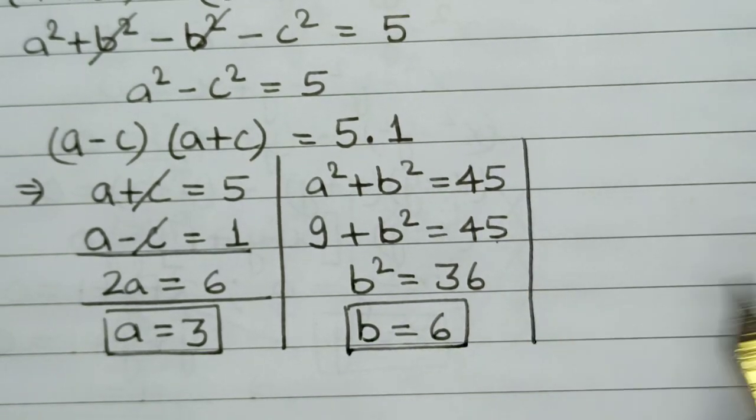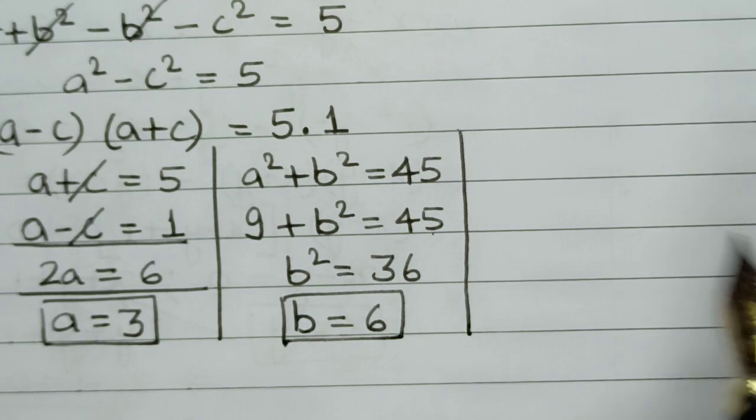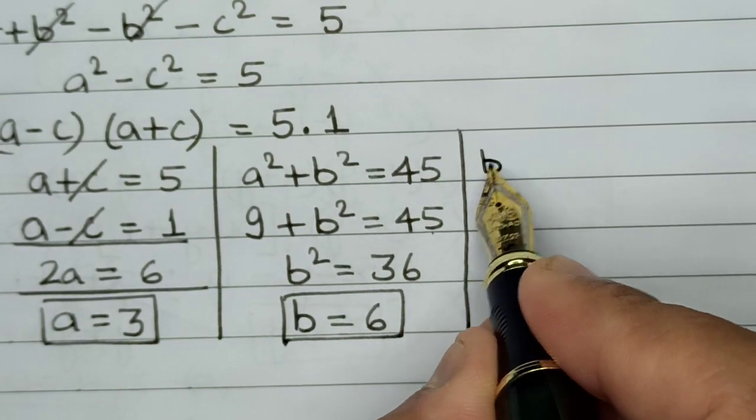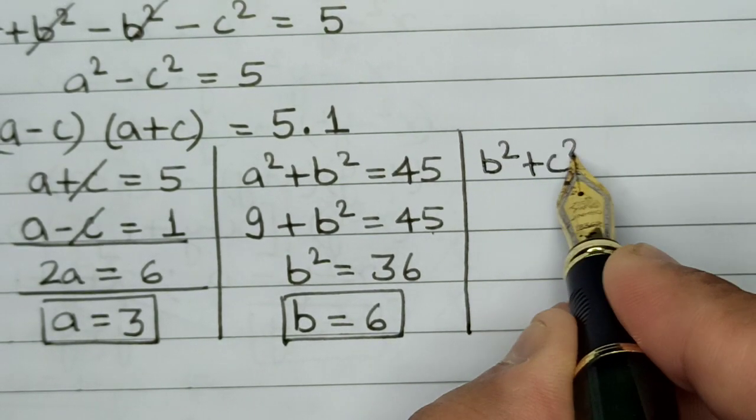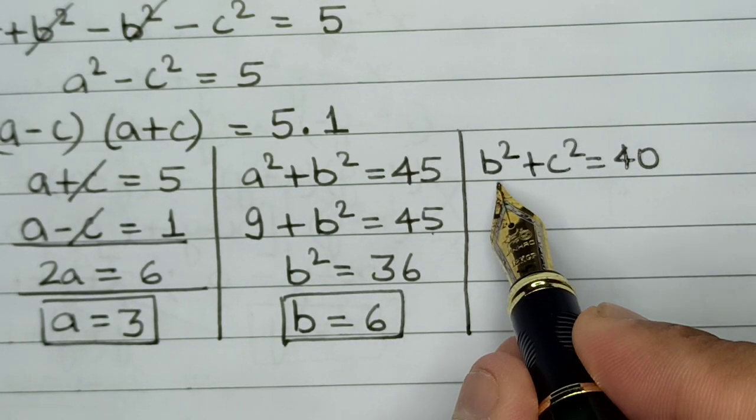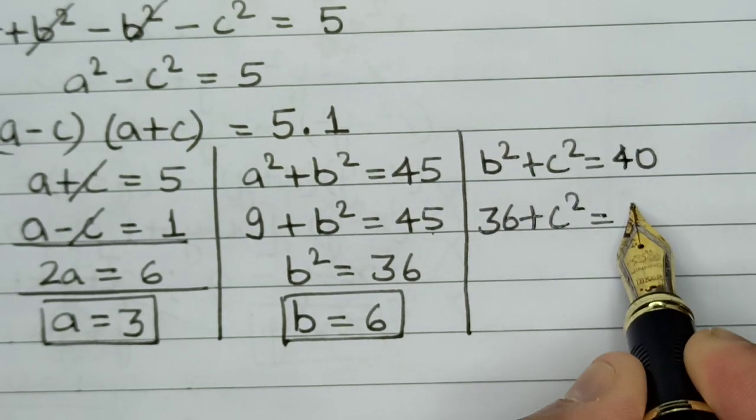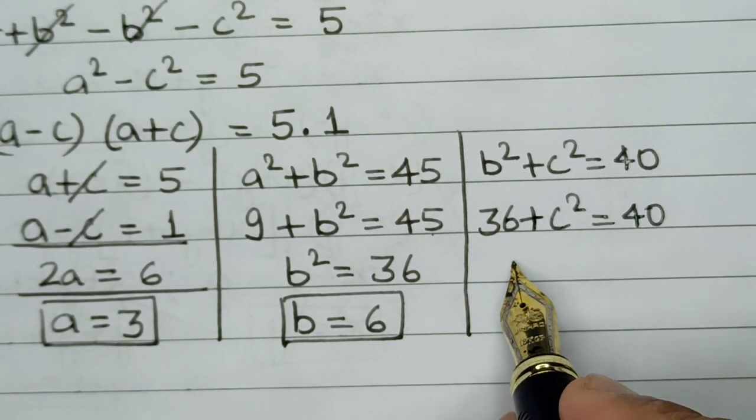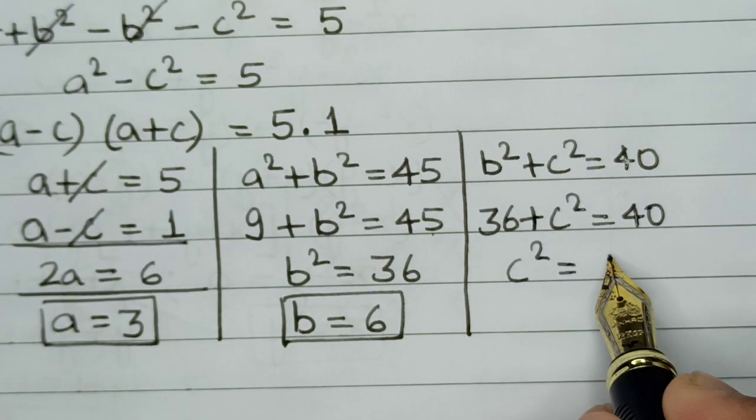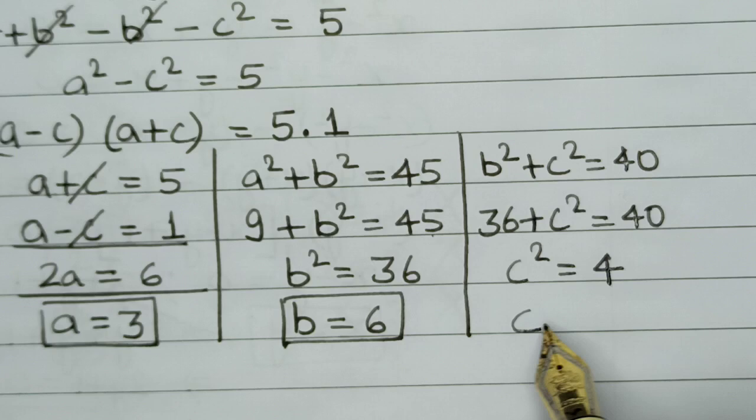Now since we have calculated the value of b, in a similar fashion let's calculate the value of c. The equation we will use is b² + c² = 40. Substituting the value of b into this equation, we have 36 + c² = 40, which gives us c² = 40 - 36 = 4. So the value of c will be 2.